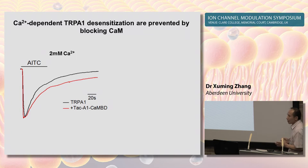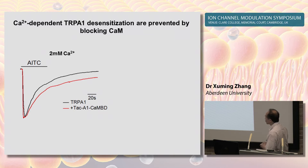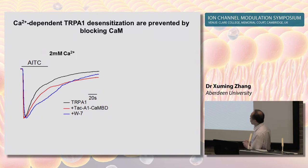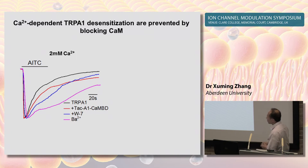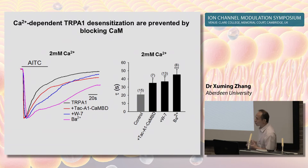We used the same approach to assess whether calmodulin is also critical for desensitization. Compared to wild-type TRPA1, co-expression of the TARC-fusion construct to sequester endogenous calmodulin markedly reduced the desensitization rate of TRPA1 channels. This desensitization was also similarly prevented by the calmodulin antagonist W-7 and even more strongly by bapta, which binds calmodulin with much lower affinity. Together, this experiment again demonstrates that calmodulin is essential for calcium-dependent desensitization of the channels.